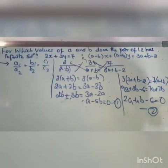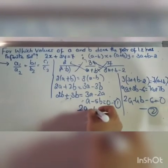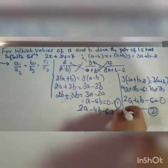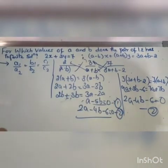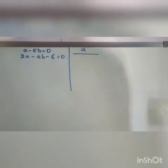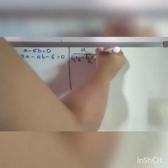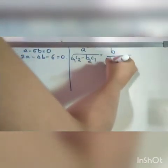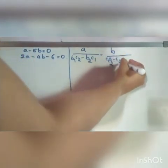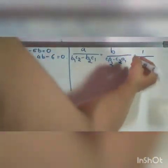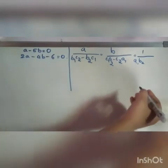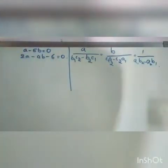We now have two equations: a − 5b = 0 and 2a − 4b − 6 = 0. By using these two equations with the cross multiplication method, we are able to find the values of a and b. Setting up: a divided by (b1·c2 − b2·c1) = b divided by (c1·a2 − c2·a1) = 1 divided by (a1·b2 − a2·b1).